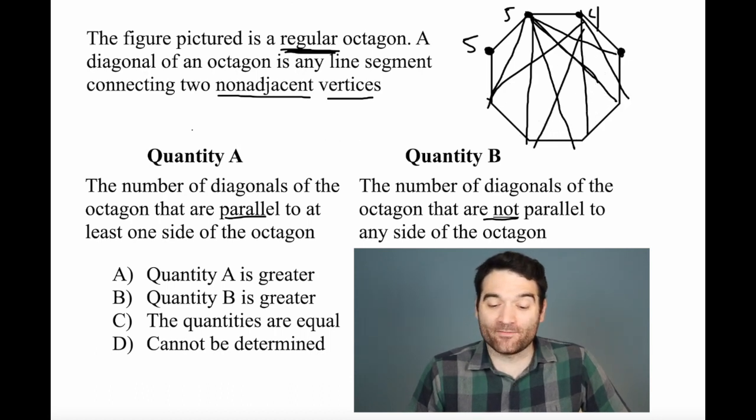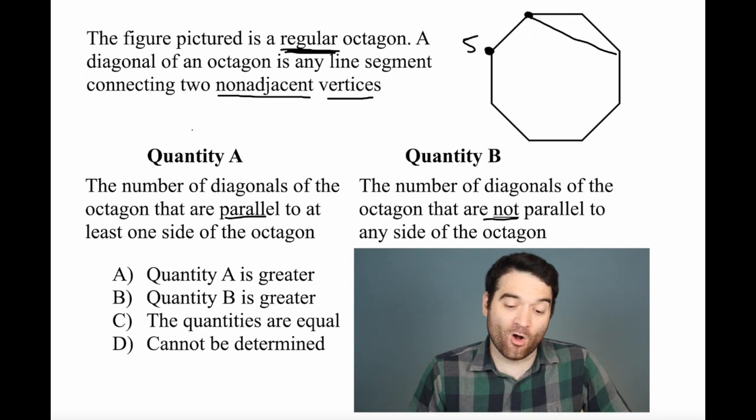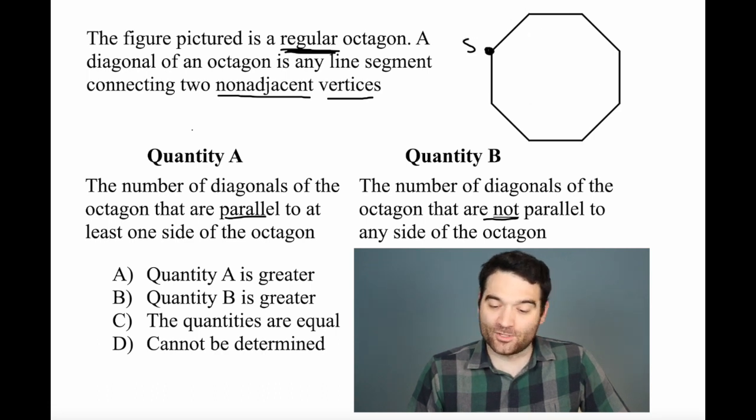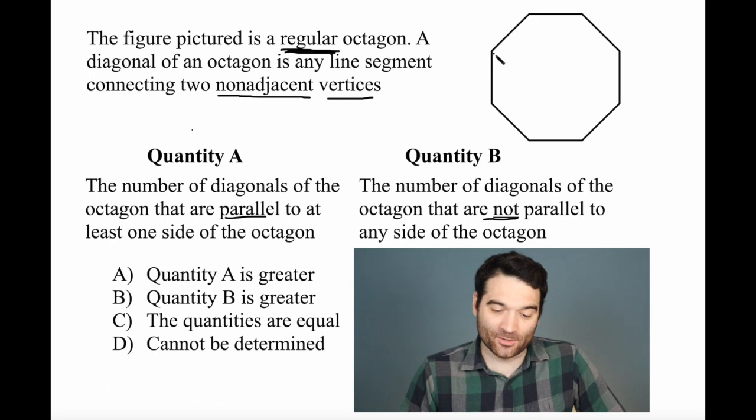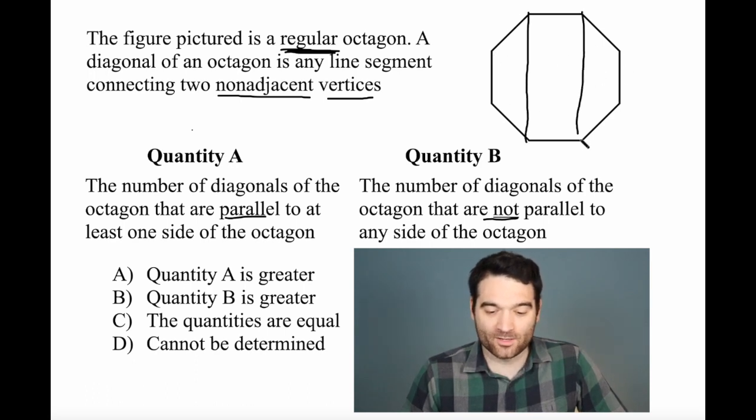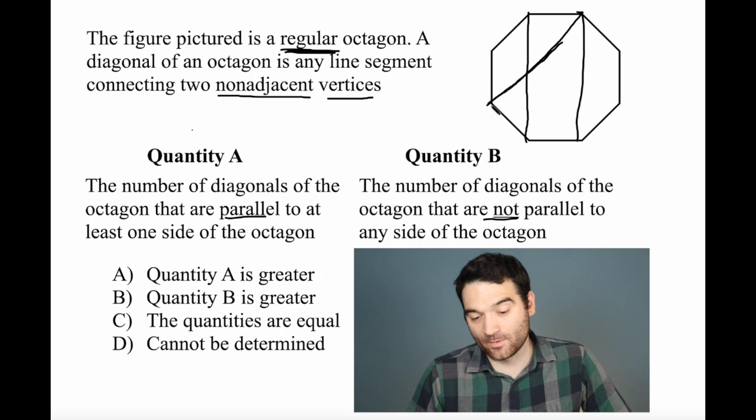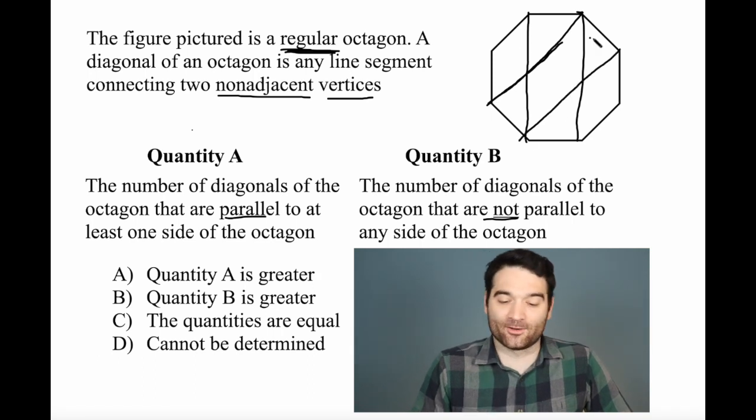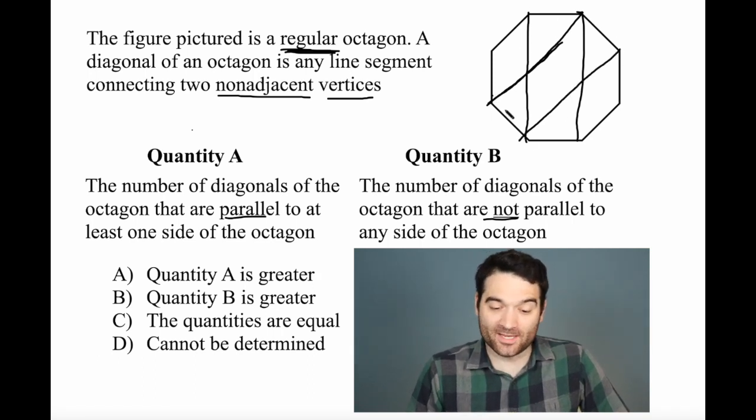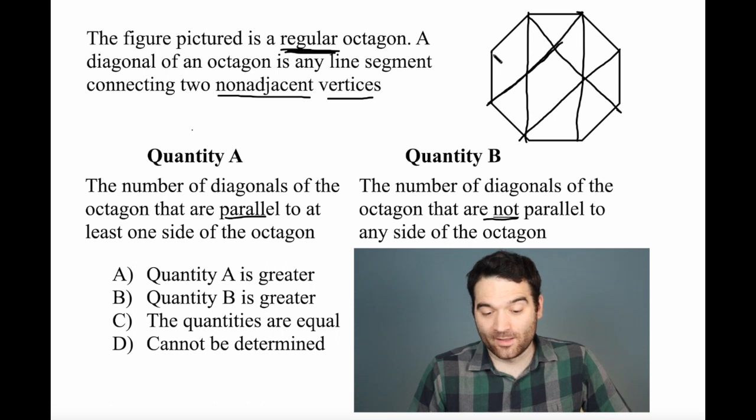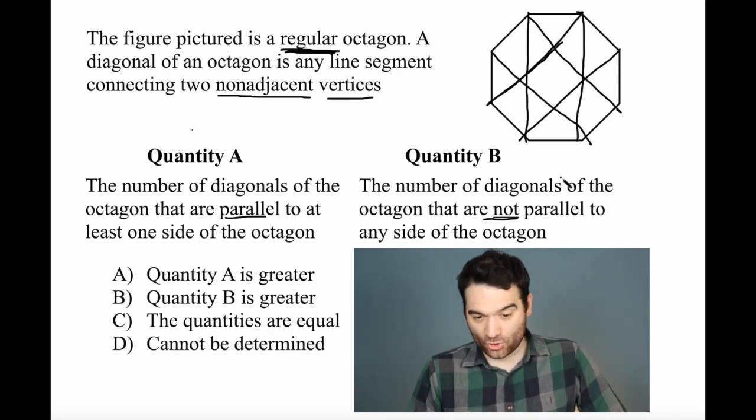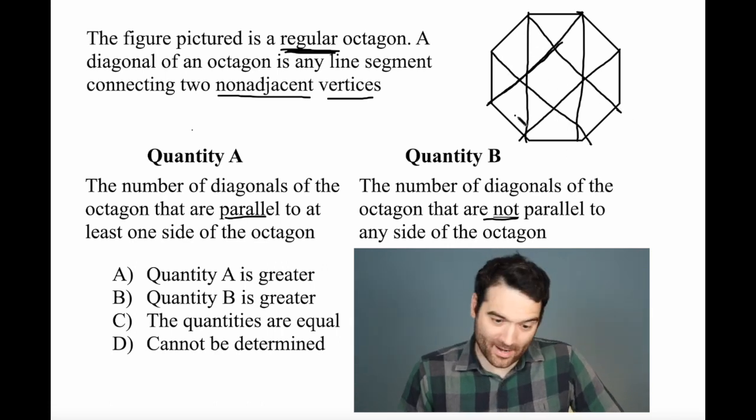And then how many of them are parallel? Well, it's actually pretty easy to draw all of the parallel diagonals. We just go side by side. So like how many diagonals are parallel to these two sides? It's going to be one, two. How many diagonals are parallel to these two sides? It's going to be one, boom, two. How many diagonals are going to be parallel to these two sides? It's going to be one, two. And then there should be one more. Nope, I got them all.